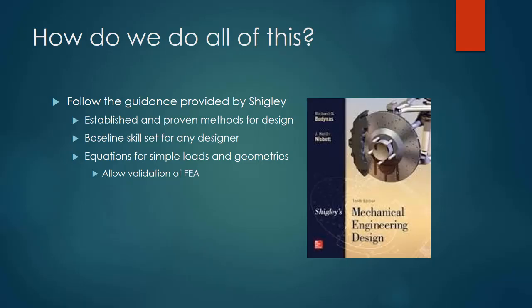There's an awful lot to cover in this class, so how are we going to do it? The first thing we're going to do is follow the guidance provided by Shigley. You have a textbook written by Shigley on mechanical engineering design. Shigley presents a lot of established and proven methods that have been time-tested and validated for the design of mechanical systems. The methods you learn in Shigley give you a really solid baseline skill if you plan to be a designer. The equations are for relatively simple loads and geometries, but they allow validation of more complicated geometries that you would CAD up and run finite element simulations on.